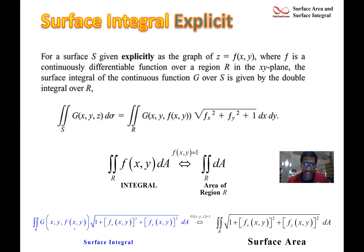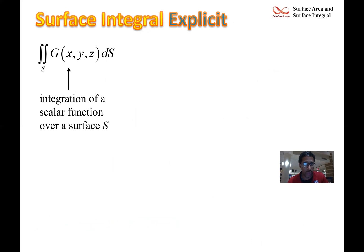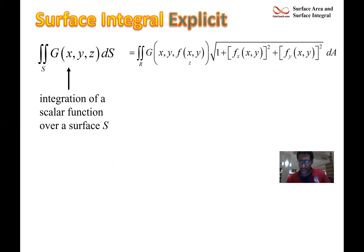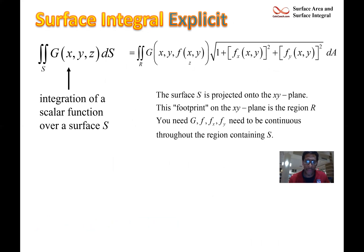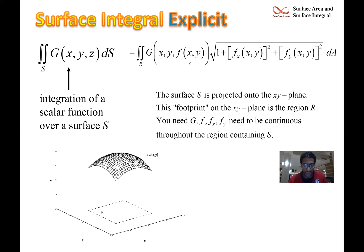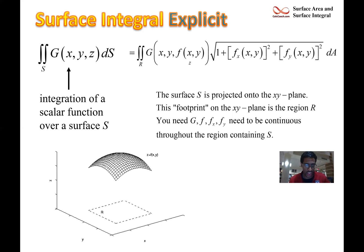We have a multivariable function g of x, y, and z, and we're integrating this scalar function over the surface S. We replace ds with the formula, and the surface S is projected onto the xy-plane — that footprint is the region R. It's nice when it's a simple rectangular region in the xy-plane. We need to make sure that g, f, and the partial derivatives are all continuous throughout the region; if so, the calculation turns into a double integral over the shadow region.